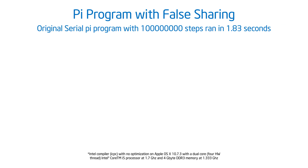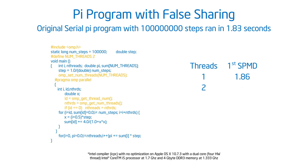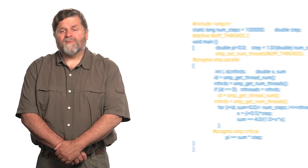Welcome back. I hope you had fun getting that PI program of yours to work using a critical section. Just to remind you, before when we took our first version of the PI program where we promoted sum to an array, we had false sharing and that clobbered the performance. I could fix that by padding the array, but that was really unsatisfactory because it required that I knew the size of my L1 cache line. That's messy, especially if I move to another machine with a different cache line size. So that was not a satisfactory solution.